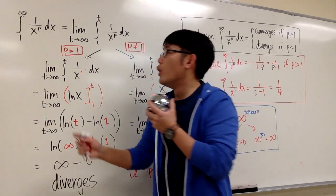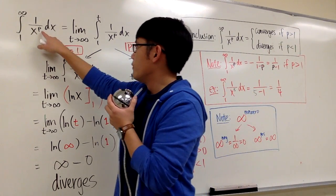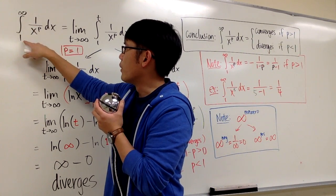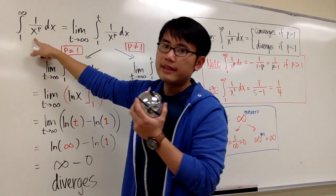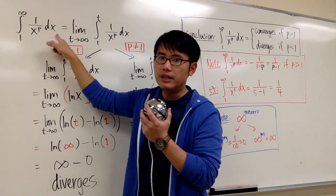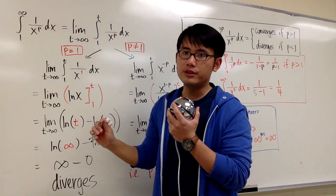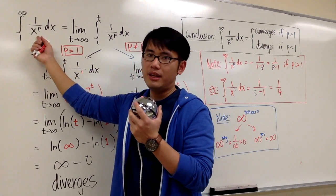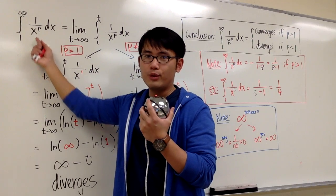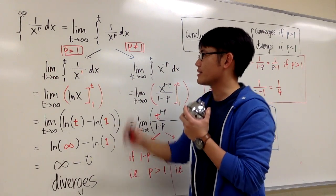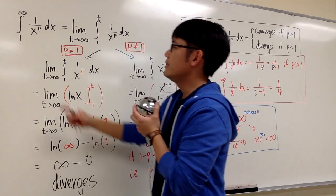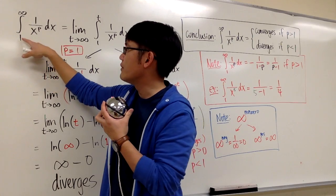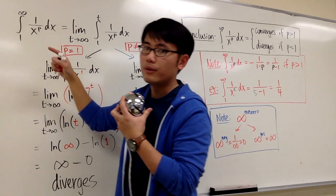The question is: for what values of p will the integral from 1 to infinity of 1 over x to the p power dx converge? This is sometimes called the p-test for integrals, or the p-integral. This is a type 1 improper integral because we have an infinite interval.